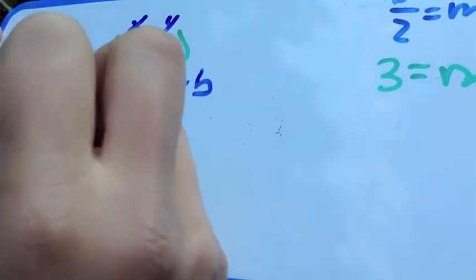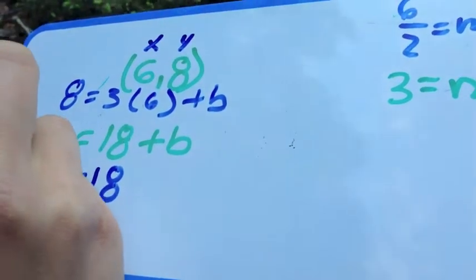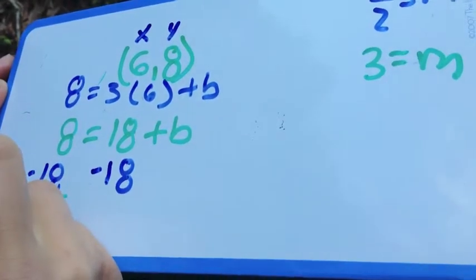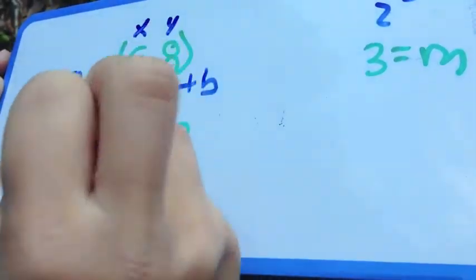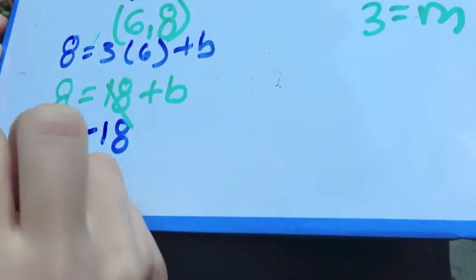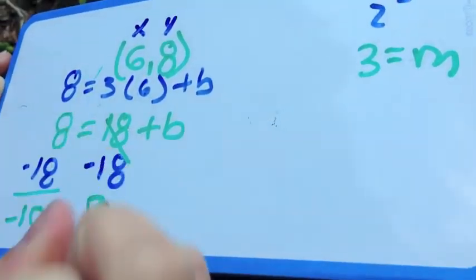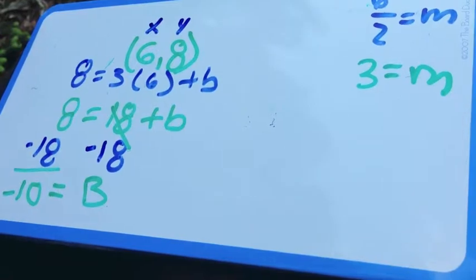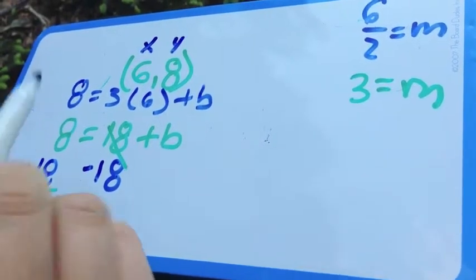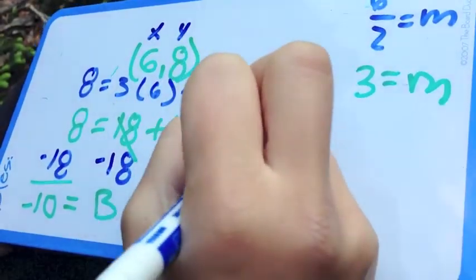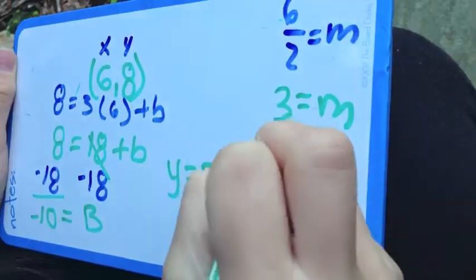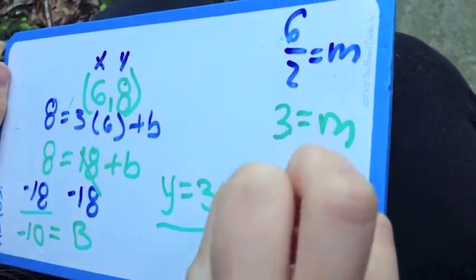So you do negative 18 and a negative. Exactly! 8 minus 18 equals negative 10. This crosses out. So b equals negative 10. Now the last and most important step. You plug it all back in. You have your y equal to your 3x minus 10. And there is your final equation.